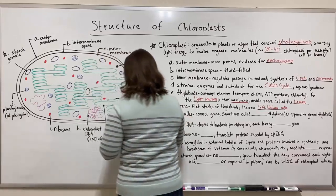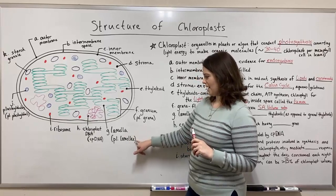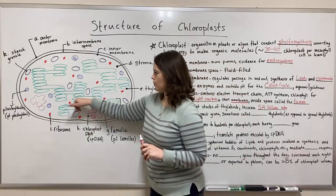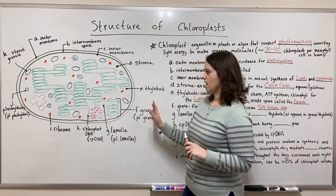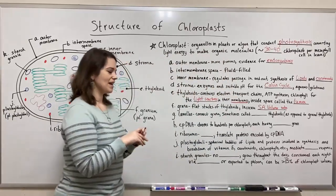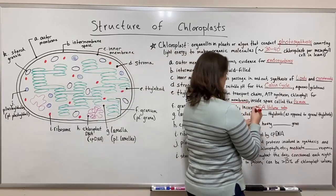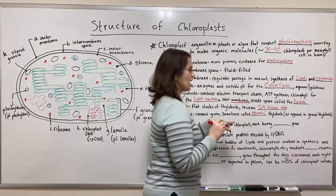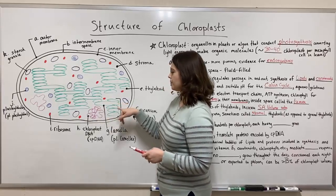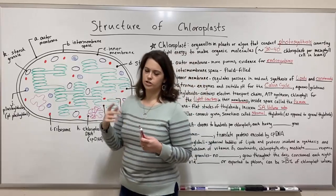Next we'll talk about the lamellae — singular: lamella, plural: lamellae, with an E at the end. This is a specialized term for those thylakoids that are quite long and connect one granum to another granum. The lamellae are a way to connect grana and make a nice interconnected system. Sometimes these will be called stromal thylakoids, as opposed to granal thylakoids. So you might hear the shorter stacked ones called granal thylakoids and the longer connecting ones called stromal thylakoids or lamellae.